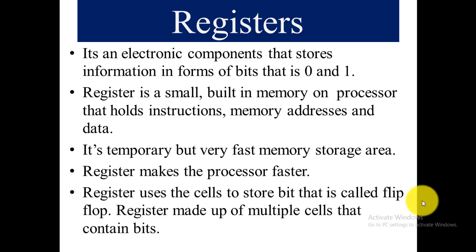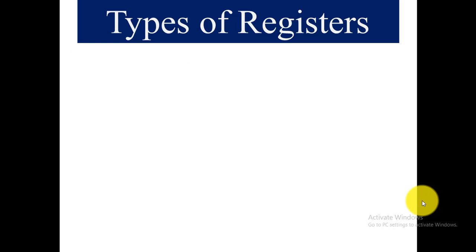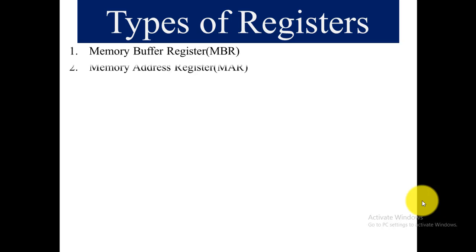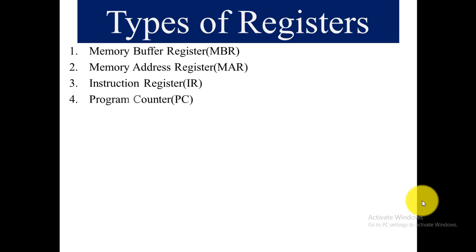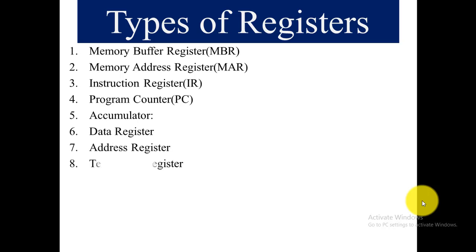There are different types of registers. The first is the memory buffer register. The second is the memory address register. The third is the instruction register. Then the program counter, the accumulator, the data register, the address register, the temporary register, and the input and output registers.